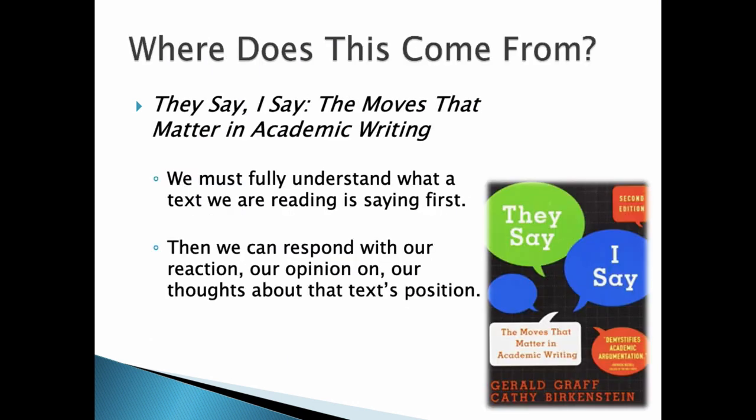So this structure of academic writing, the PEA paragraph, comes from a myriad of sources that we have put together to construct this idea. It is a structure rooted in a lot of academic study of what makes good academic writing. And so the cornerstone book that we have referred to is called They Say, I Say, The Moves That Matter in Academic Writing. And their premise is that we as writers must first understand what we are responding to when we are being readers. So we have to fully understand what a text is saying, what a political cartoon is saying. Then we can craft our response. And that oftentimes, if our responses are in this structure, then they are more easily understood to the readers of our own work.